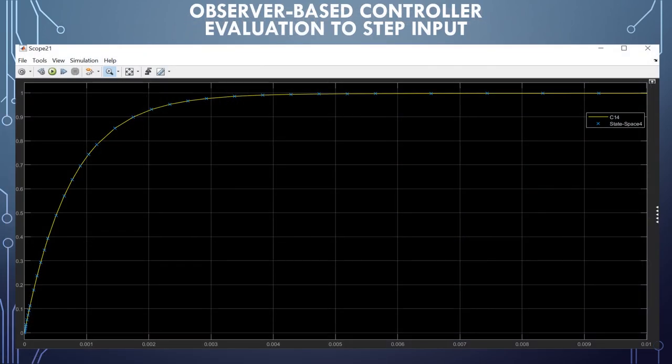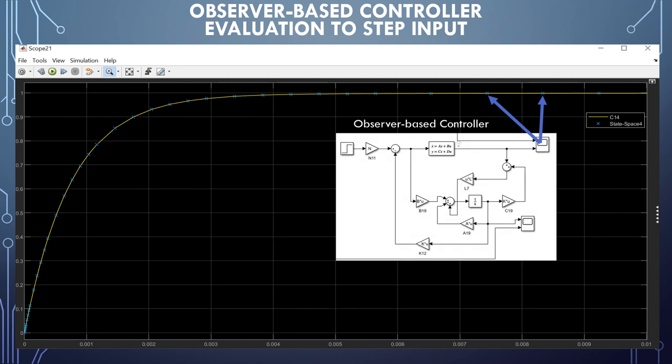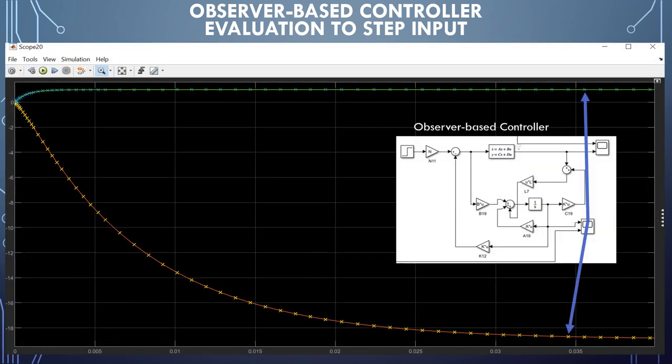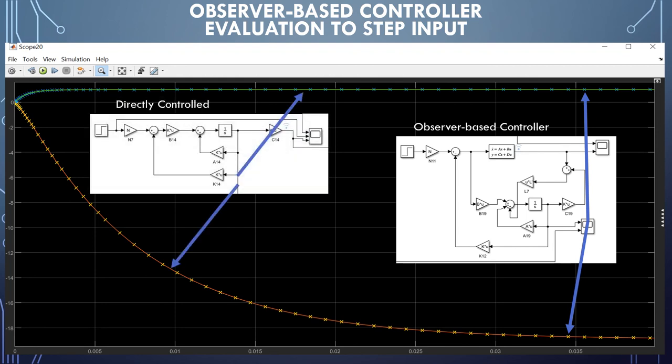Plotted here is the optimized system step response to both the observer-based controller and the directly controlled system. Note that the response is identical. If we evaluated the estimated states of the observer with the actual states, we see that the estimations are also identical to the actual states. This means that our observer is working perfectly.